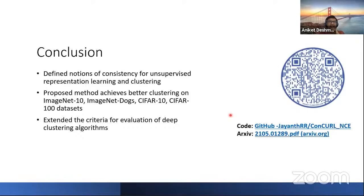In conclusion, we defined a new notion of consistency — consensus consistency — and proposed an abstraction of exemplar, population, and consensus consistency, which is the first such abstraction in unsupervised representation learning. We improve on state-of-the-art methods and also introduce various evaluation criteria beyond max performance to show both the effectiveness of the method and some of its downsides.